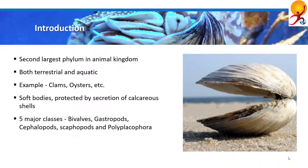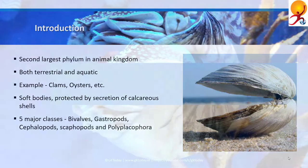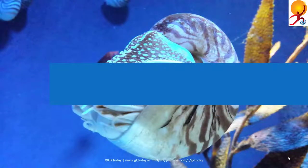There are five main classes of Phylum Mollusca: Bivalves, Gastropods, Cephalopods, Scaphopods — which mean tooth shells — and Polyplacophora, which is made of chitons. Bivalves, Gastropods, and Cephalopods are the commonly known Mollusca animals.